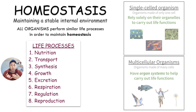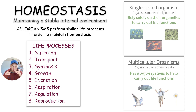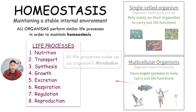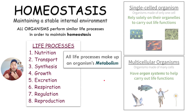Those life processes include nutrition, transport (moving things around), synthesis (making different things inside cells and organs), growth, excretion (getting rid of waste), respiration (making ATP and bringing in oxygen), regulation (control and coordination with the brain and nucleus), and reproduction. All these life processes make up an organism's metabolism — when we talk about metabolism, we're talking about the life processes that an organism is doing.